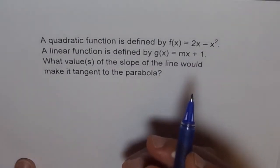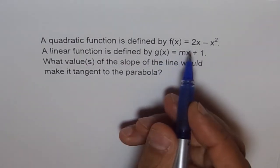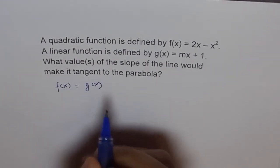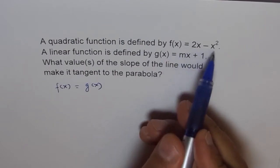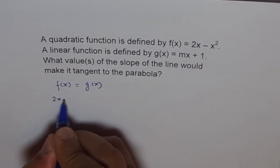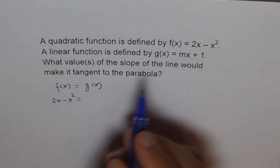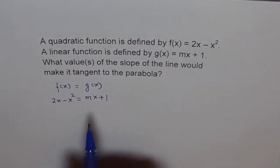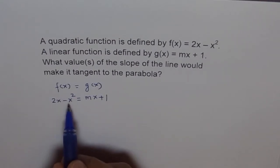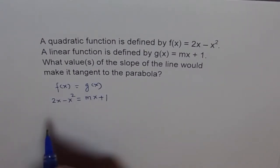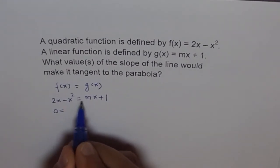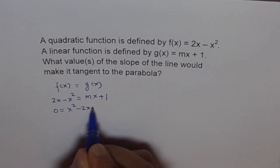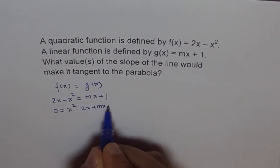For them to intersect, f(x) should equal g(x) at some point. So we set 2x - x² equal to mx + 1. To solve it, let's bring everything to one side. Since x² is negative here, I prefer to bring it to the other side, giving us: 0 = x² - 2x + mx + 1.